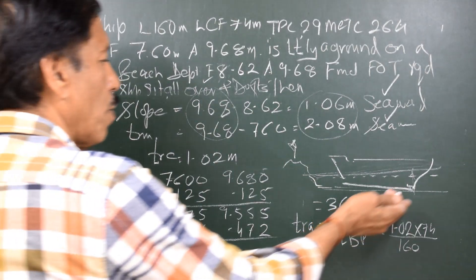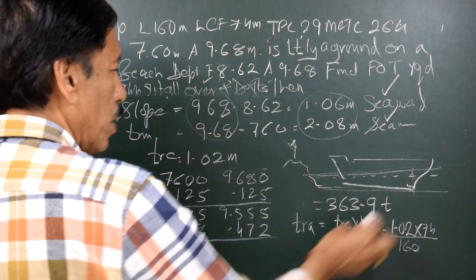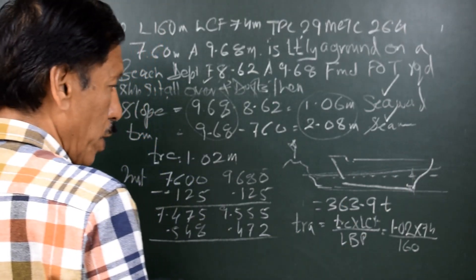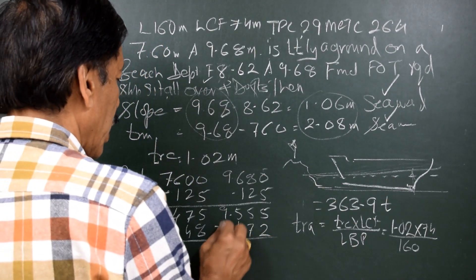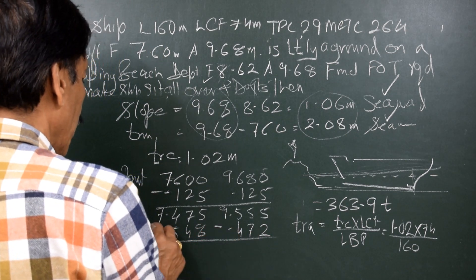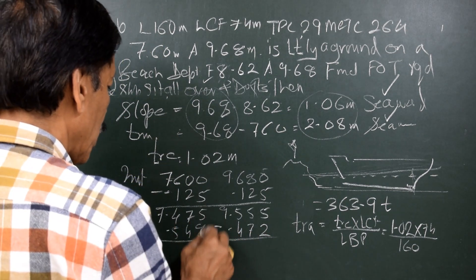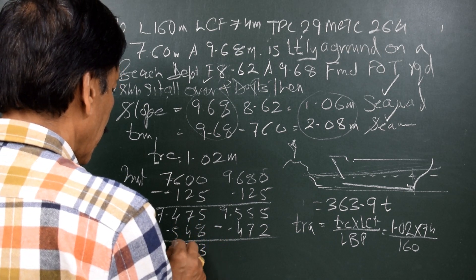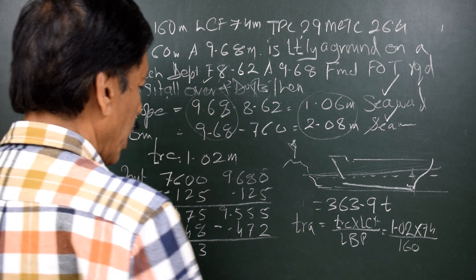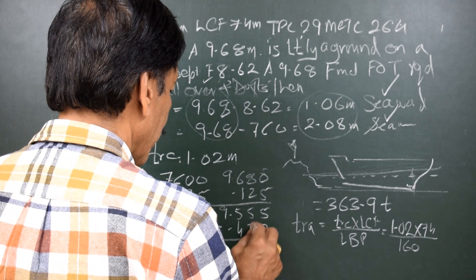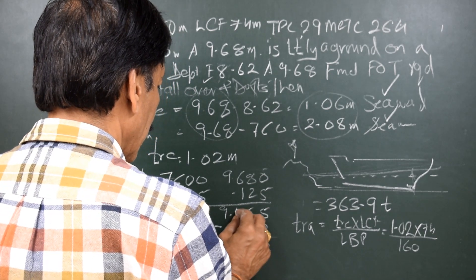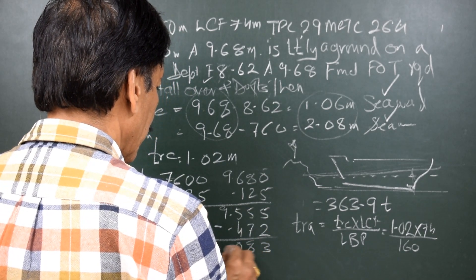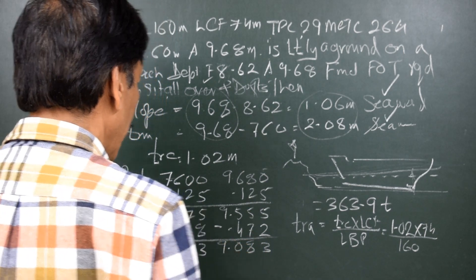Now, because we are discharging from aft in a way, there is a virtual discharge of weight from aft, so aft will be negative and if aft is negative, forward will be positive. So forward draft becomes 8.023 and aft draft becomes 9.083.